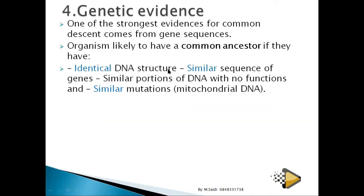Organisms are likely to have a common ancestor if they share identical DNA structure. For example, chimpanzees share almost 98% of their DNA with humans, meaning we are related to chimpanzees. A similar sequence of genes — the way they are aligned — also indicates a common ancestor, as does similar portions of non-functional DNA.